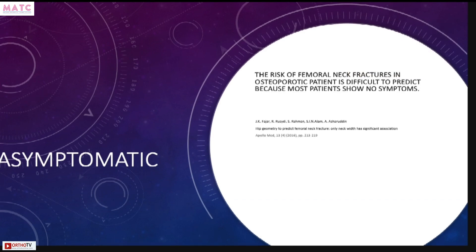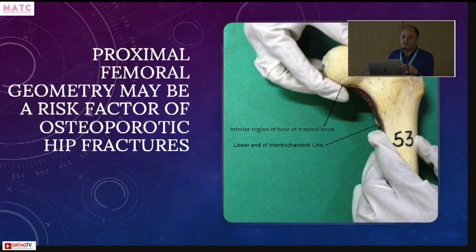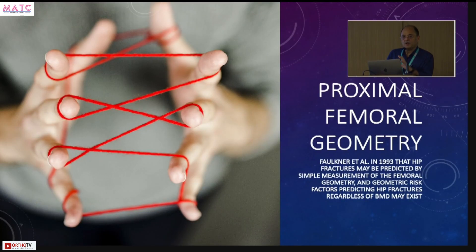There have been attempts to segregate these risks by doing proximal femoral geometry assessment, which is considered a potential risk factor for osteoporotic fractures. Generally, osteoporosis starts towards the upper end of the neck, and these are the fractures where the fracture actually starts — in the upper end of the neck.